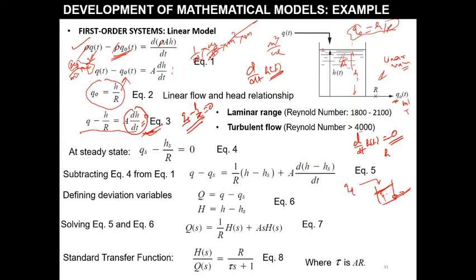At steady state, Q takes the value Q_s and H takes the value H_s. So the steady state equation becomes Q_s minus H_s/R equals zero, since d/dt of H_s is zero. Any problem with this equation?